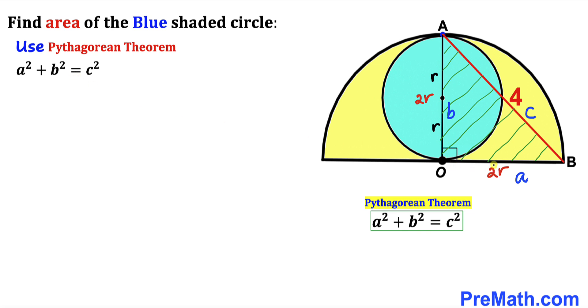A in our case is 2r, B is 2r as well, and c is 4. So therefore this is going to become (2r)² + (2r)² = 4².